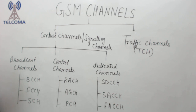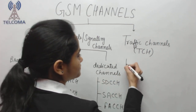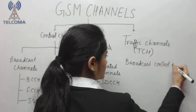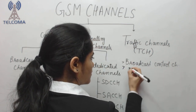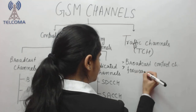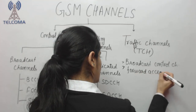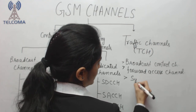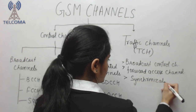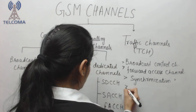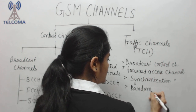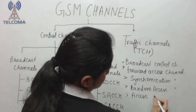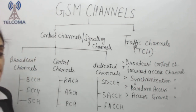BCCH stands for Broadcast Control Channel, FCCH stands for Frequency Correction Channel, and SCH stands for Synchronization Channel. RACH stands for Random Access Channel, and AGCH stands for Access Grant Channel.